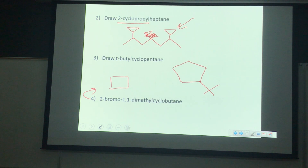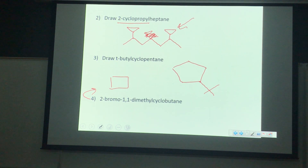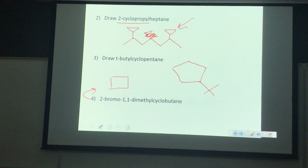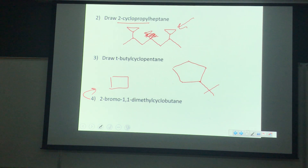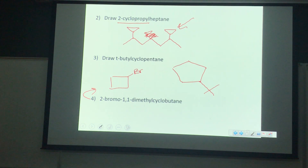This stuff is going to take practice, practice, practice — because you're going to be looking at something and you'll wonder: when do I do the alphabet and when do I do the numbers? Obviously five came before one-one here, but I needed the one-one to come first. Practice, practice, practice.